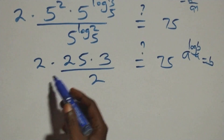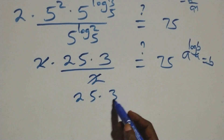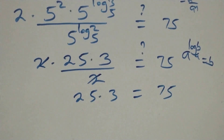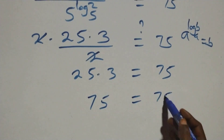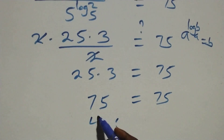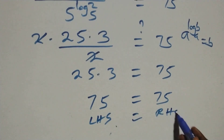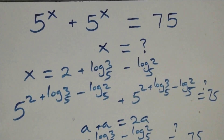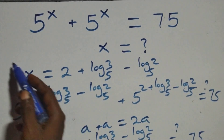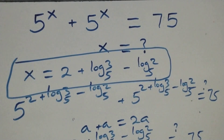The 2s cancel each other, and we have 25 times 3 equals 75. Of course 25 times 3 gives us 75, which equals 75, so left-hand side equals right-hand side. Therefore we conclude that x equals 2 plus log₅3 minus log₅2 satisfies the given problem.